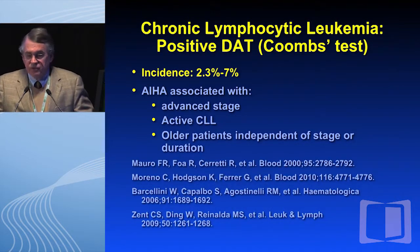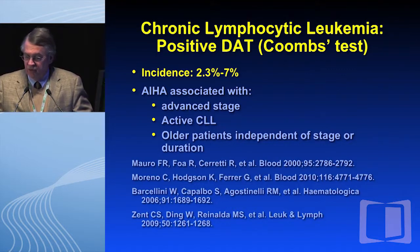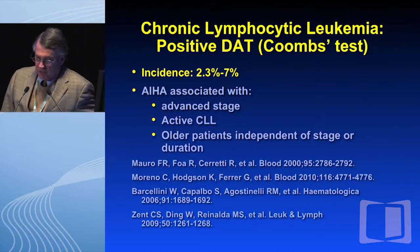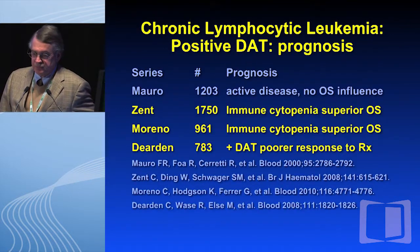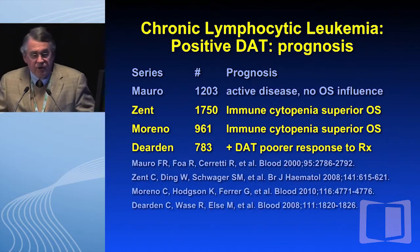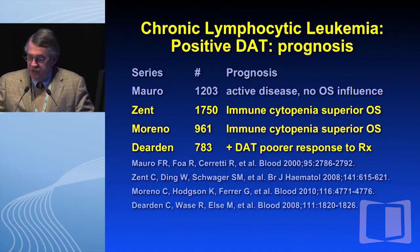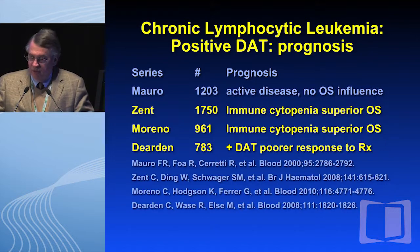What's the incidence of a positive Coombs test? It is 2.3% to 7% in different papers; it's associated with advanced stage, active CLL, and older patients independent of stage or duration. Regarding prognosis, in at least two large series — the dataset by Clive Zent and others, and data from Marino and colleagues with 961 patients — the immune cytopenia patients had a superior overall survival.